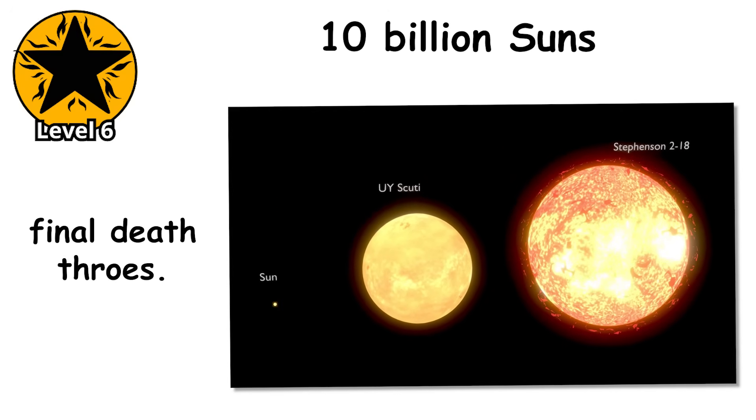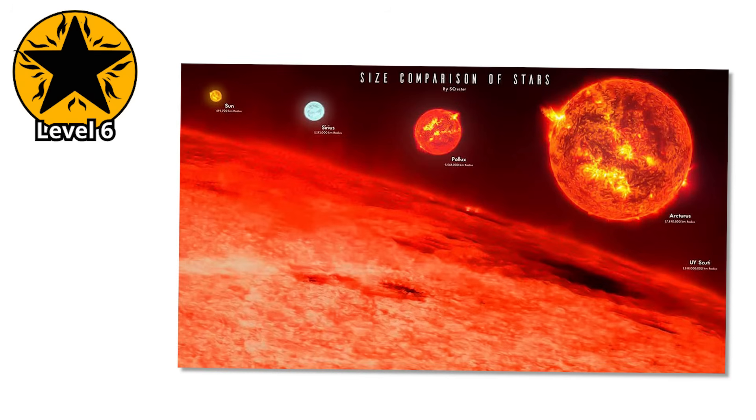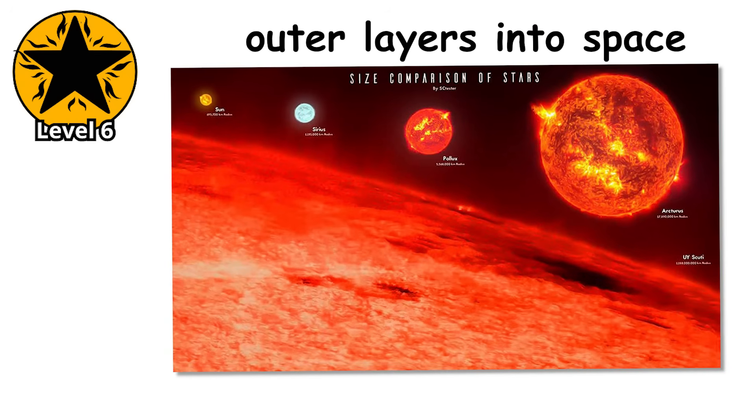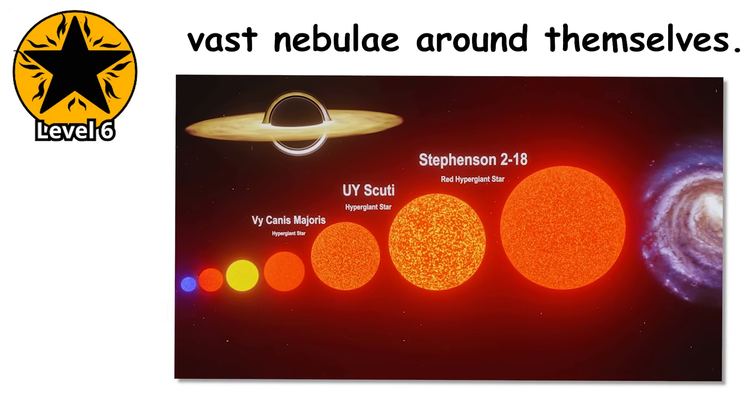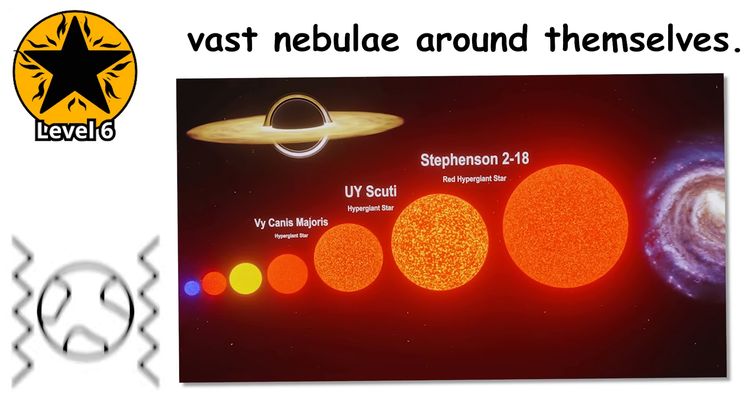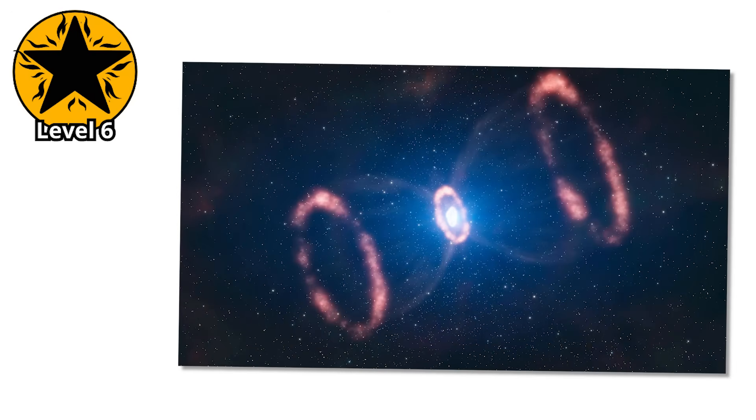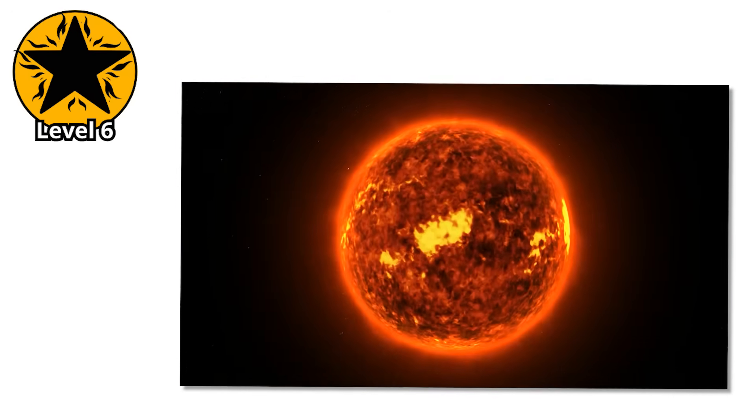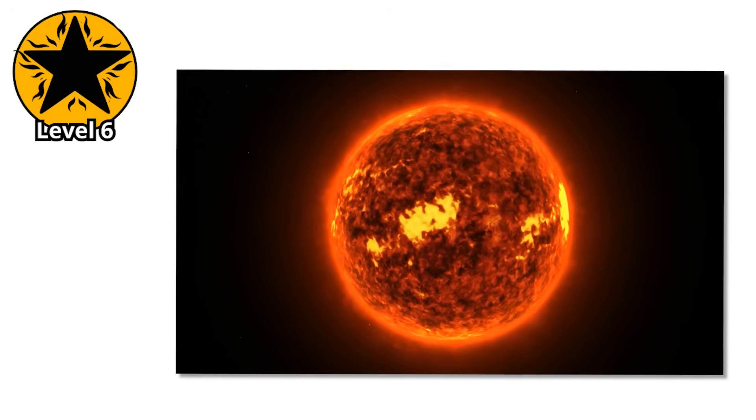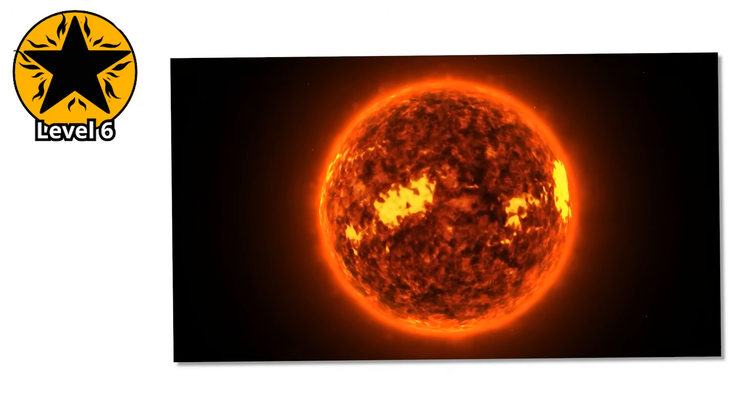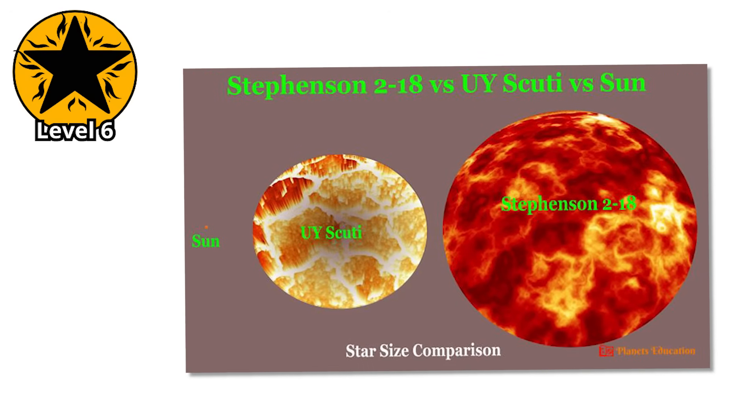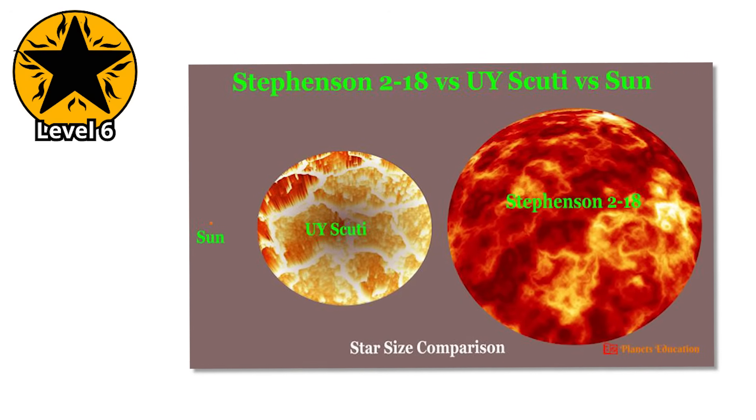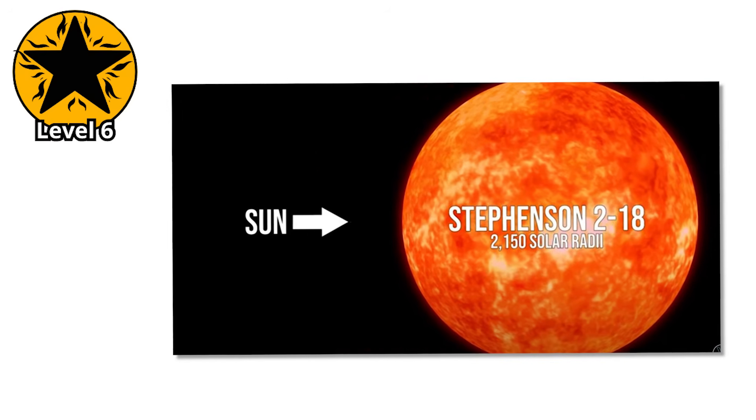These stars are in their final death throes. They've exhausted most of their fuel and are ejecting their outer layers into space through powerful stellar winds, creating vast nebulae around themselves. Eventually, the core will collapse, triggering a supernova, and the star will vanish. The stellar winds from these behemoths carry away mass equivalent to Earth's mass every few years, slowly dismantling the star from the outside while the core continues its relentless march toward gravitational collapse and the inevitable explosive finale that awaits.